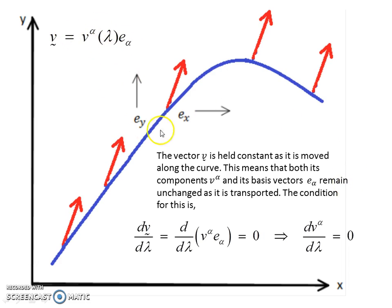Okay, so here's our vector here. These are our basis vectors. Because we're in Euclidean space, flat space, the basis vectors are constant everywhere no matter where we look. So the vector v is held constant as it's moved along the curve, it's transported parallel to itself, hence the name parallel transport.